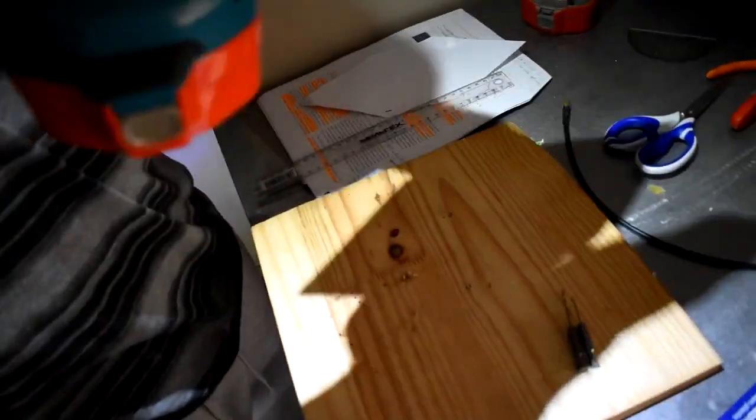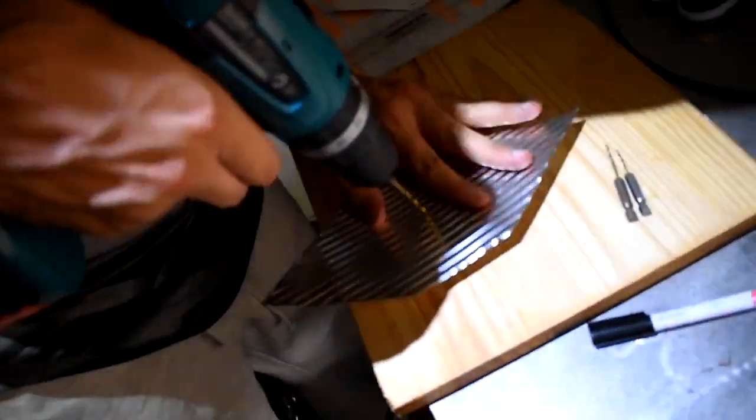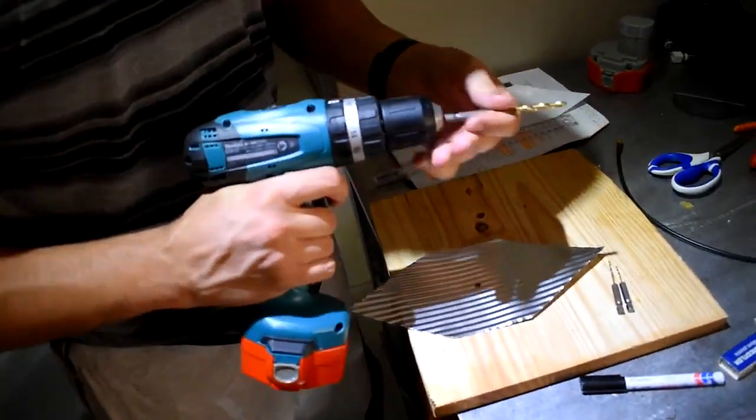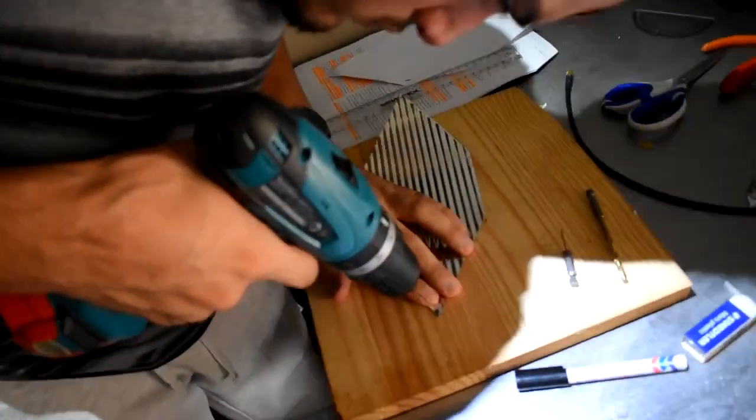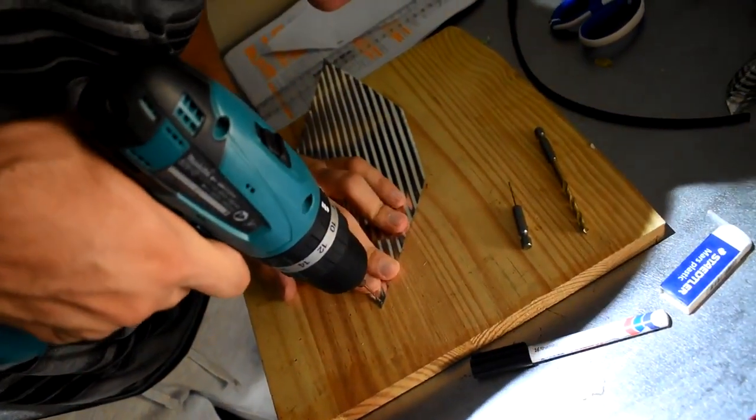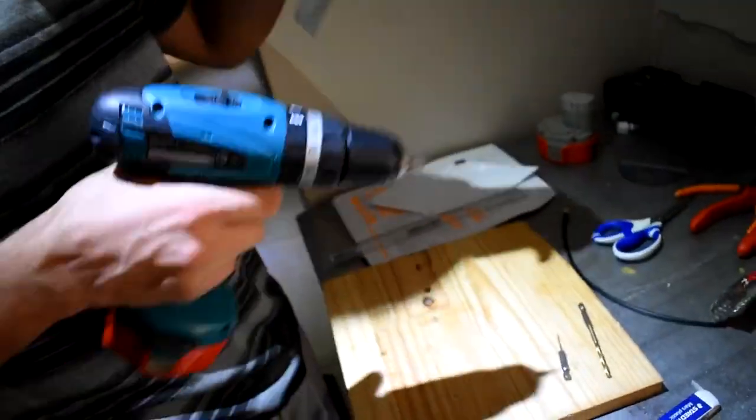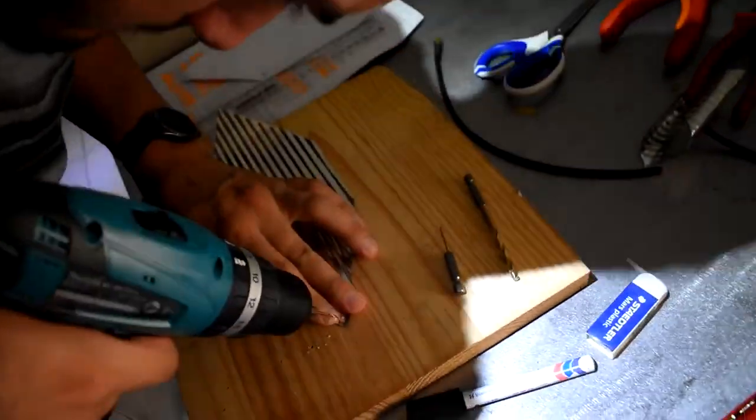The next step involves drilling holes into the cut-out template so that the various portions of the RG58 coaxial cable can be threaded through. Use the 6 mm drill bit to drill a hole at the center point and the 4 and 2 mm drill bits to drill the holes that will be at the end point.